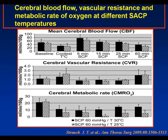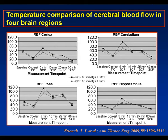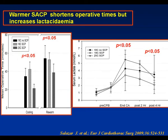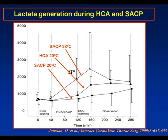Clinically, warmer SACP shortens operative times. Data from Salazar published last year compared 18 degree and 25 degree centigrade SACP. In the 25-degree group they saw shorter cooling and rewarming periods, but higher serum lactate generation—a potentially adverse clinical effect. When Johnson et al. looked at microdialysis in an experimental model, they saw higher brain tissue lactate generation with higher SACP temperatures.